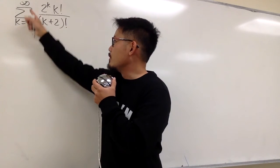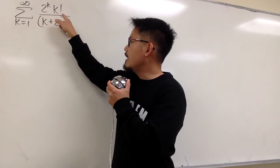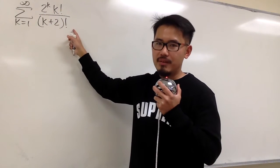Converge or diverge: sigma when k goes from 1 to infinity, 2 to the k's power times k factorial, over k plus 2 in the parentheses, factorial.